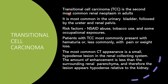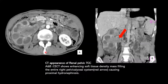Transitional carcinoma is the second most common renal neoplasm, seen in the urinary bladder, followed by the ureter and renal pelvis. Risk factors include NSAID abuse, tobacco use, and occupational exposure. Patients present with hematuria, pain, and weight loss. The most common CT appearance is a small hypodense lesion; the amount of enhancement is less than that of surrounding renal parenchyma, appearing hypodense compared to the kidney. It presents as an enhancing soft tissue mass filling the entire renal pelvicalyceal system, causing proximal hydronephrosis.